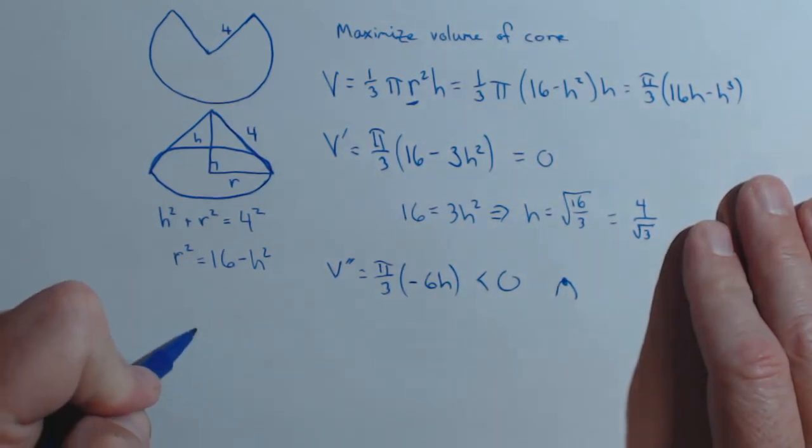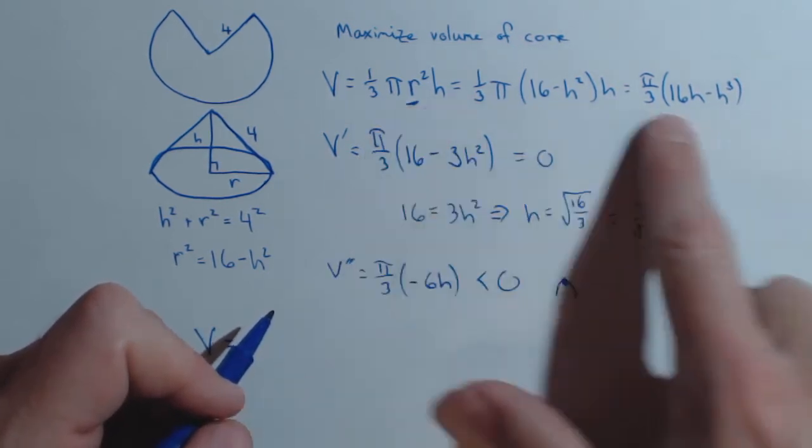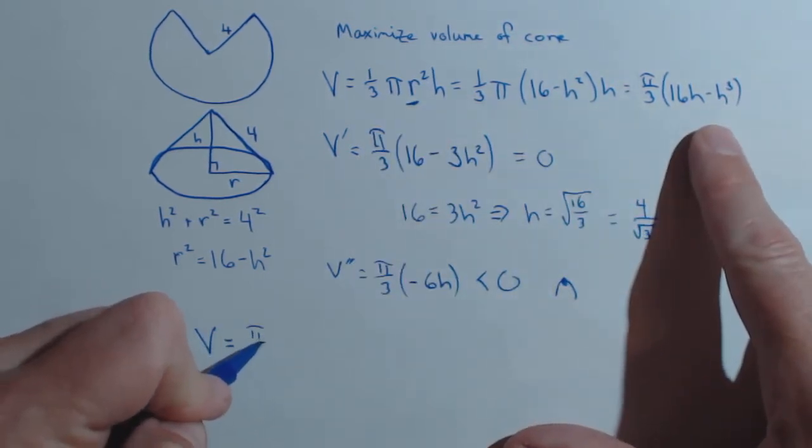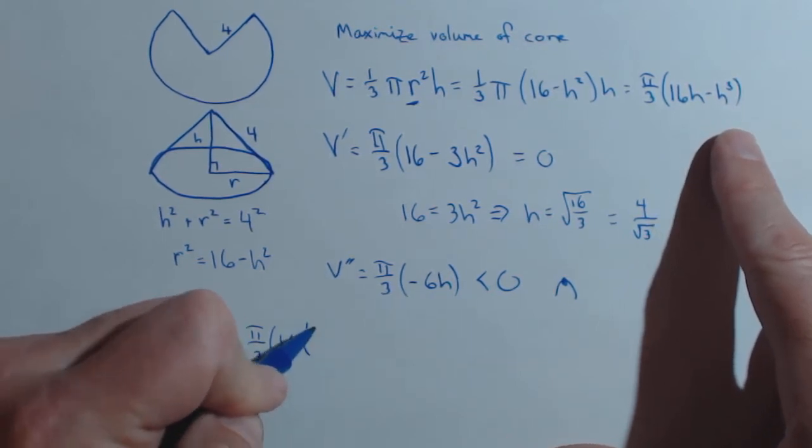So now let's evaluate our volume at this point. So right here, our volume is pi over 3, 16 times 4 over rad 3,